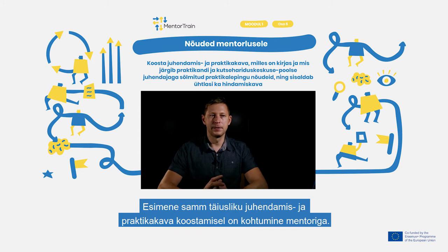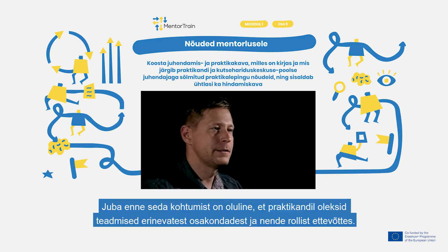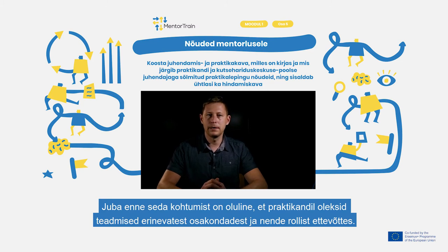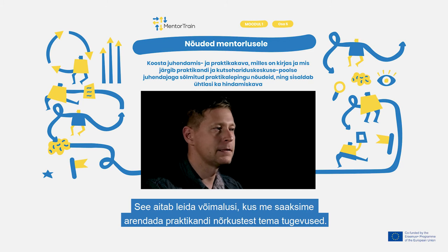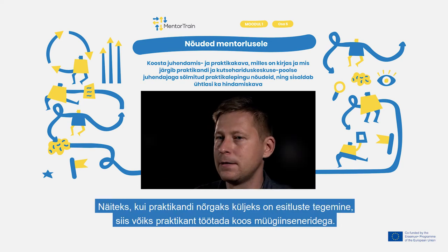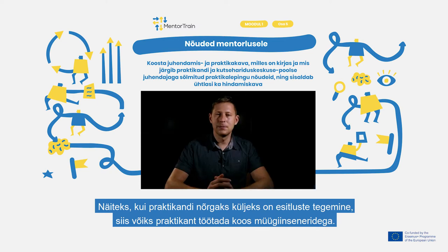The first step for designing a perfect mentoring and apprenticeship plan is meeting with the mentor. Before that meeting it's important that the apprentice already has knowledge about different departments and their tasks in the company. It helps to find possibilities where we can develop the weaknesses of the apprentice into strengths. For example, when one weakness of the apprentice is presentations, then the apprentice could work together with sales engineers.